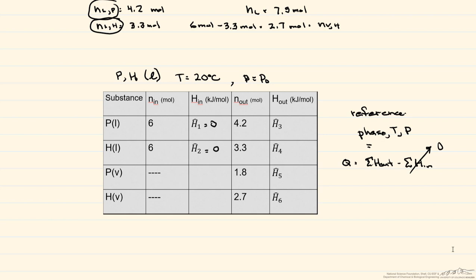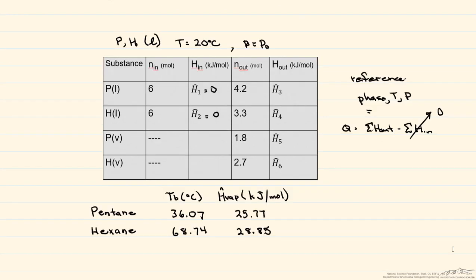So because the vapor enthalpies involve phase change, we need to find the boiling points and the heat of vaporizations for both pentane and hexane. So let's put them in right now. In addition, because we're going to need to find sensible heat or heat caused by a temperature change, we're going to need the heat capacities of both the liquid and the vapor for both pentane and hexane.